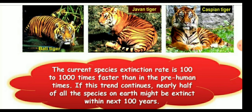Now there is a 6th extinction presently in progress, different from the previous episodes. The difference is in the rates. The current species extinction rates are estimated to be 1,000 to 10,000 times faster than in pre-human times. If this trend continues, nearly half of all species on earth might be extinct within the next 100 years.